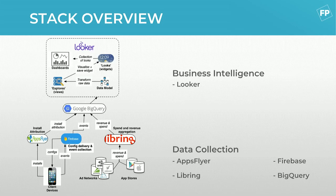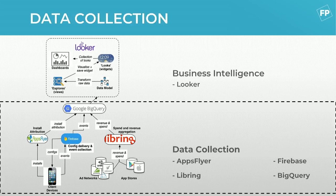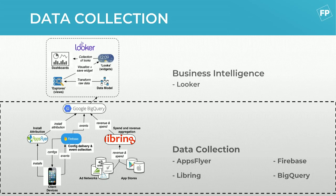We built our own stack, and more and more gaming companies are building stacks that look similar to this. On the lower layer we have data collection — the aim is to get everything into one data warehouse, which for us is Google BigQuery. We pull install information from AppsFlyer into BigQuery. Firebase automatically pipes events data, gameplay data, and transactional IAP data into BigQuery as well. For all user acquisition networks, revenue networks, and app stores we use a tool called Libering — basically one API to all of them — so we only need to pull once.